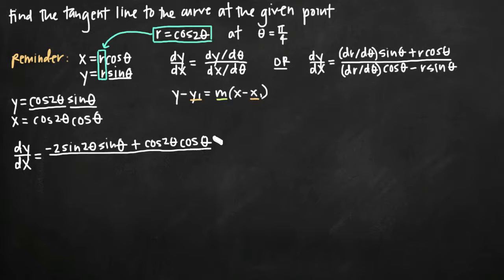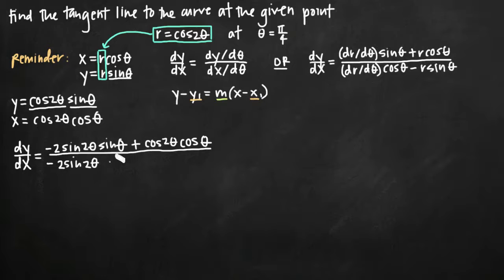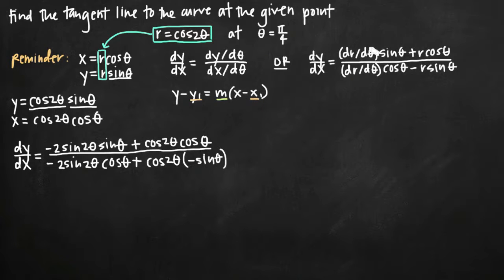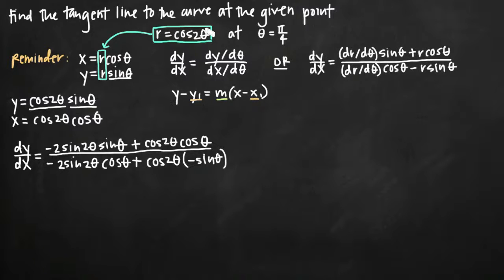In the denominator, we take the derivative of x equals cosine of 2 theta times cosine of theta with respect to theta. Using product rule again: the derivative of cosine of 2 theta is negative 2 sine of 2 theta, multiplied by cosine of theta, plus cosine of 2 theta left alone times the derivative of cosine of theta, which is negative sine of theta. You can now see the second polar slope formula emerging — dr/dθ times cosine theta plus r times cosine theta in the numerator, and dr/dθ times cosine theta minus r times sine theta in the denominator.